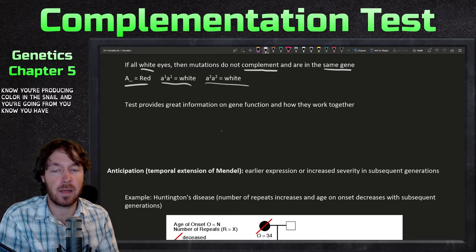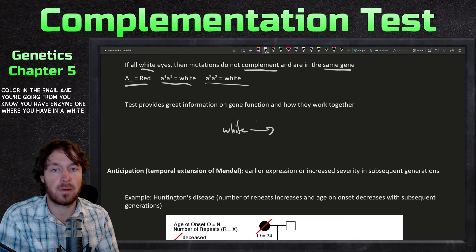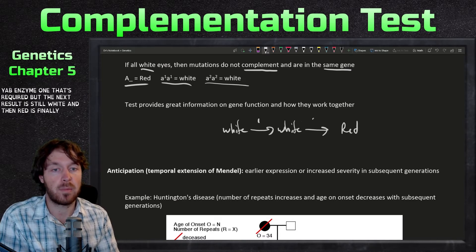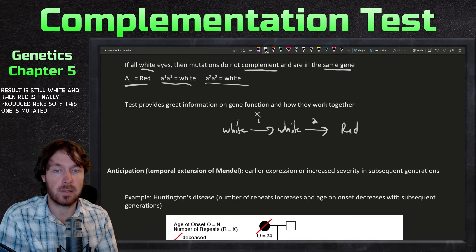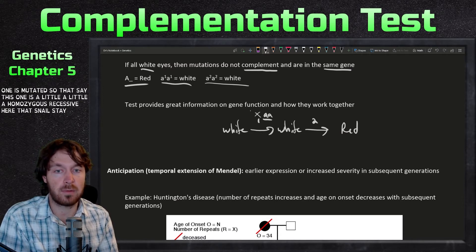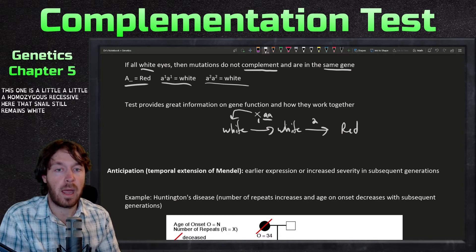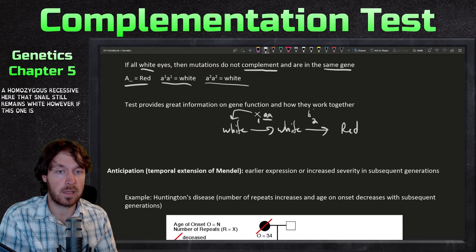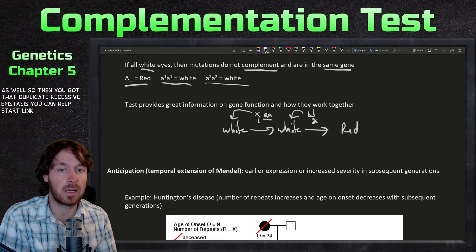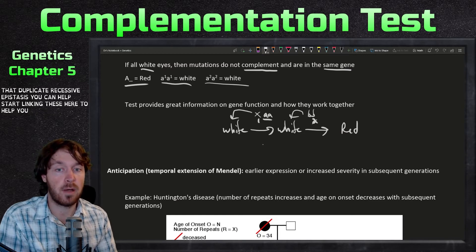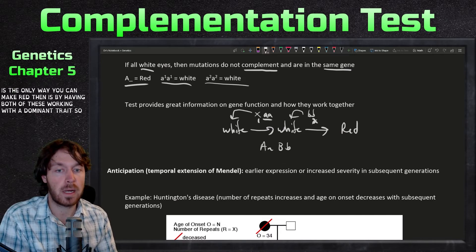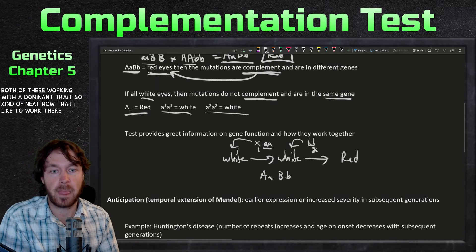In the snail example, enzyme one is required but the intermediate result is still white, and red is finally produced at the end. If enzyme one's gene is homozygous recessive, the snail remains white. If the next gene is also recessive and mutated, that snail also remains white. The only way to produce red is by having both genes working with a dominant trait — that's how duplicate recessive epistasis links these pathways.